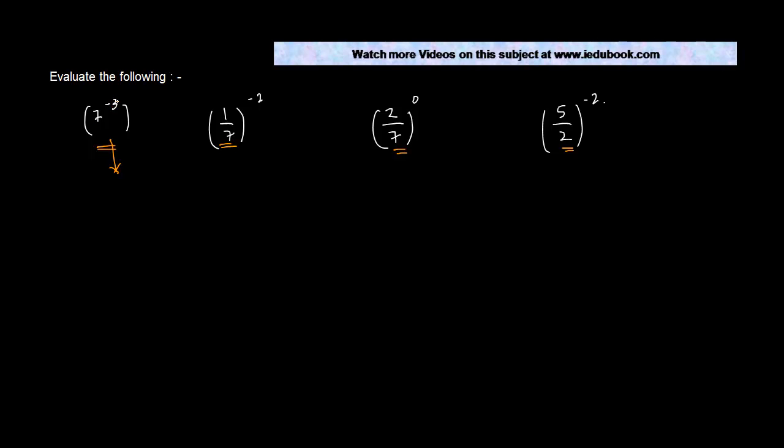So here seven is the base, the exponent is minus three. Now in order to change the exponent from negative to positive, what do we do? We basically change a numerator into the denominator.